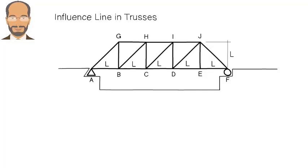What do I mean by that? I mean how does the axial force in the member change over time as the load moves across the bridge? For example, consider member DJ. How does the force in the member change as the unit load moves from A to F?